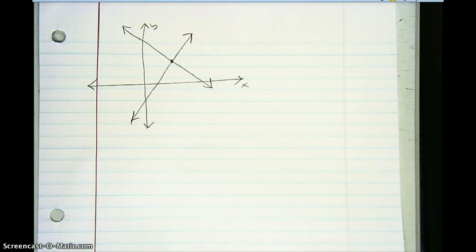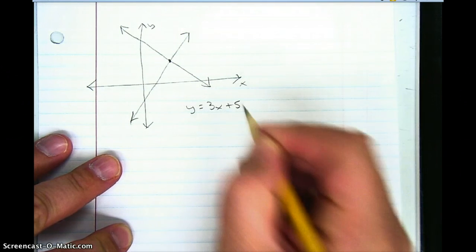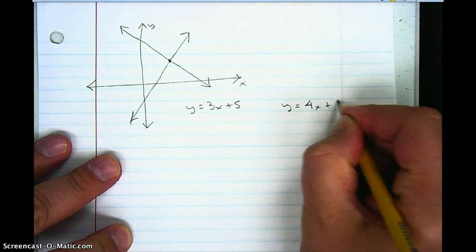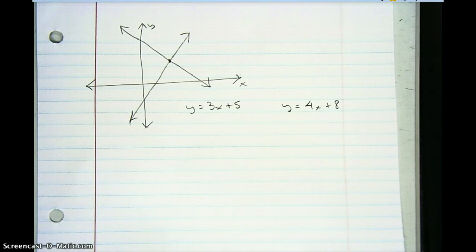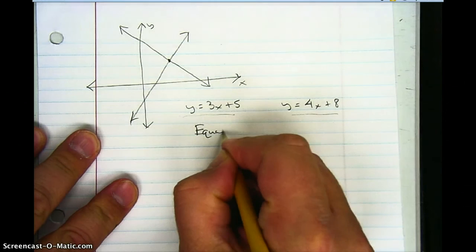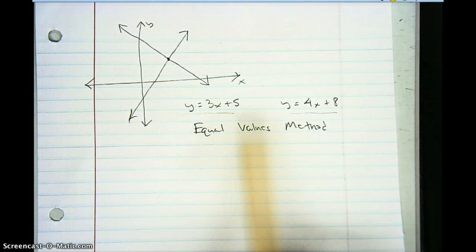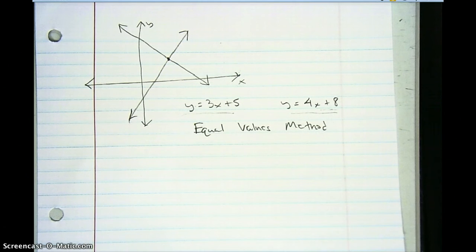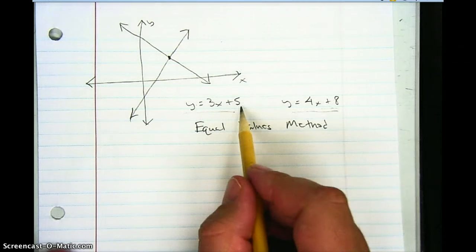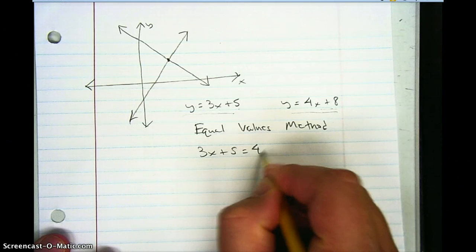The first problem I'm going to do, I'm going to solve this system of equations using the equal values method. I call it the equal values method because both 3x plus 5 and 4x plus 8 are both equal to y. Since they're both equal to the same thing, I can set them equal to each other. They're going to cross when 3x plus 5 is equal to 4x plus 8.